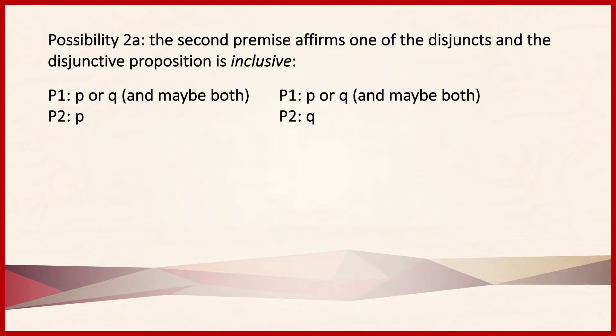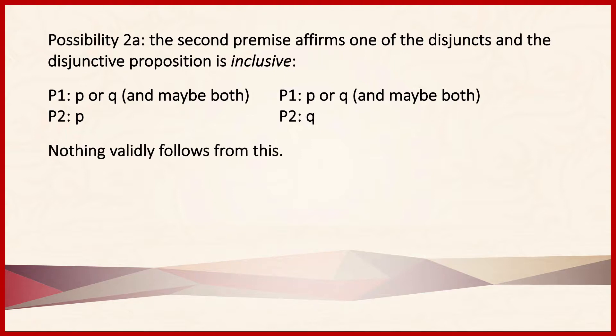Let's begin with possibility 2a, where the second premise affirms one of the disjuncts and the disjunctive proposition is inclusive. To say a disjunctive proposition is inclusive is to say it asserts P or Q as the case, and maybe both. In the argument on the left we have P or Q inclusive and P; in the argument on the right we have P or Q and Q. What follows from each? In fact, nothing does. Premise one says P or Q is the case, and maybe both — so if P is true, Q could be true or false. These don't combine to give us anything.